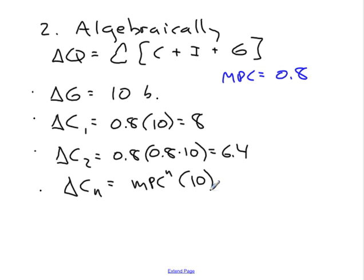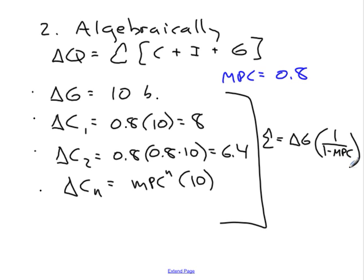Then they will sum, the sum of all these terms will be the original increase in government spending times 1 over 1 minus the MPC.